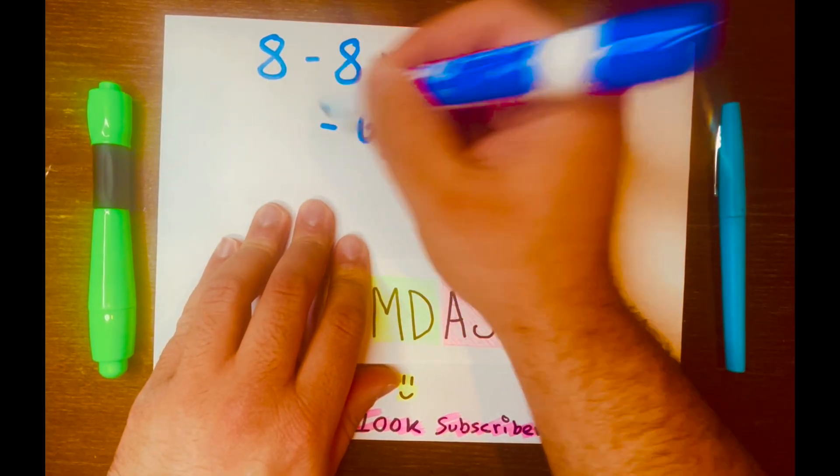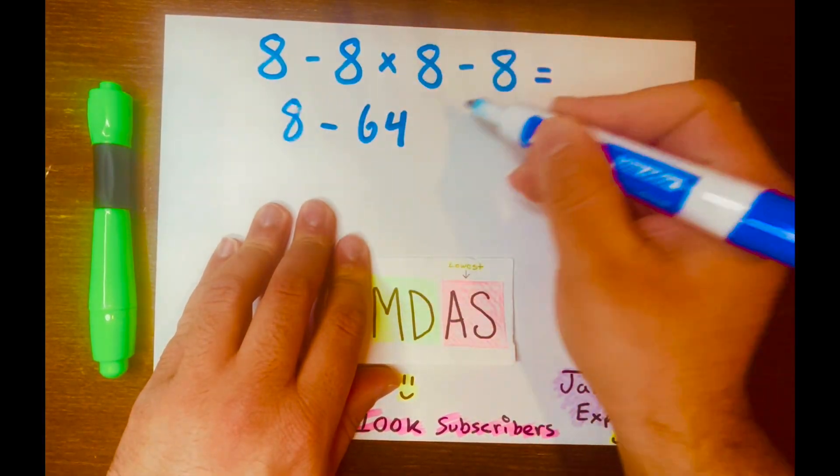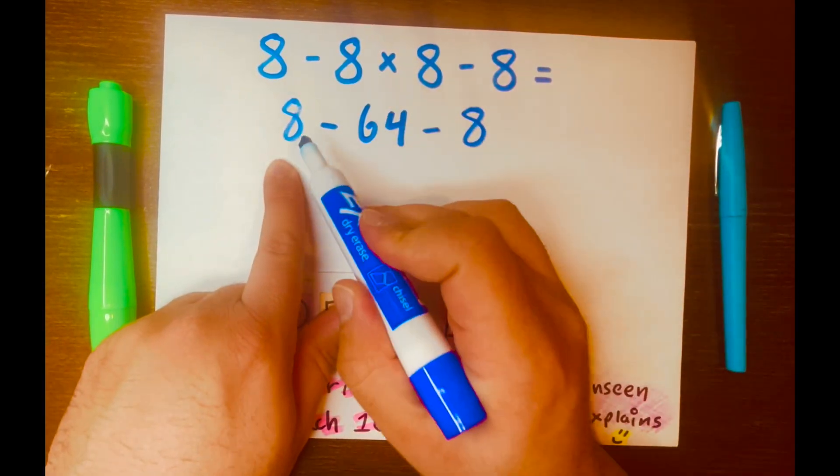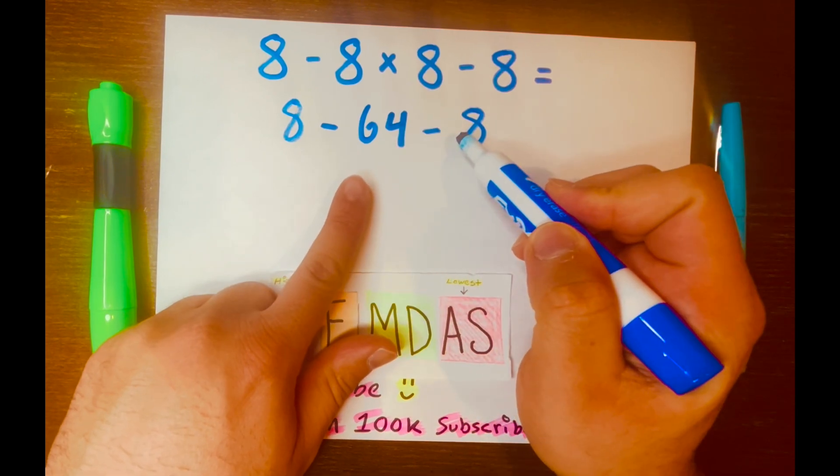And then bring down the subtraction symbol down, the 8 down, the other subtraction symbol down, and the 8 down. Now we have 8 minus 64 minus 8.